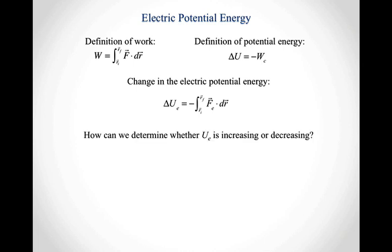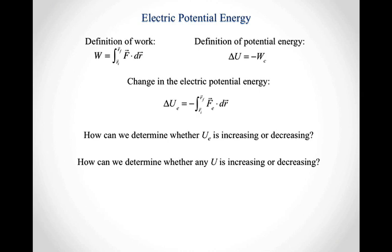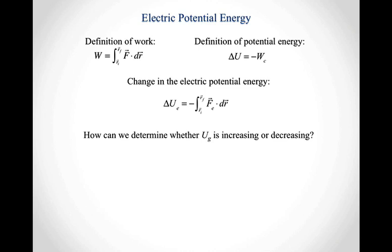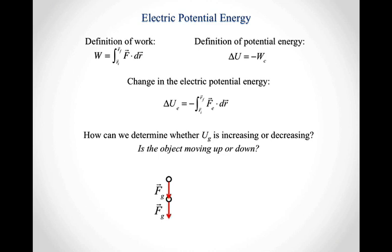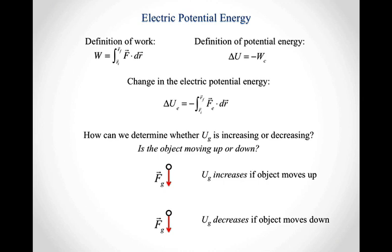How can we determine whether the electric potential energy is increasing or decreasing? Let's think about what we learned last semester. How can we determine whether the gravitational potential energy is increasing or decreasing? The fundamental question was: is the object moving up or down? We had some object with a gravitational force pulling it downwards, but the object itself could move up or down. If it moves up, the gravitational potential energy increases. If the object moves down, the gravitational potential energy decreases.